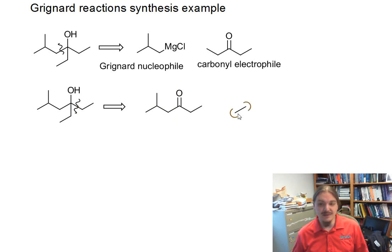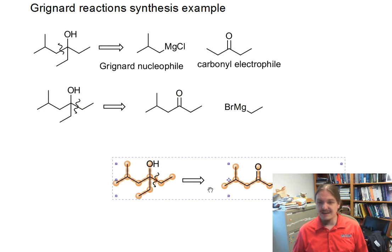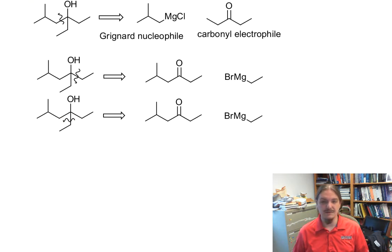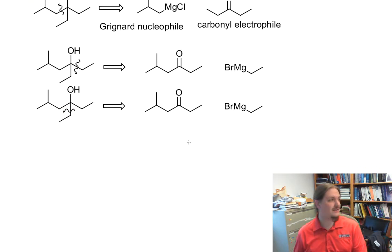The other piece that comes off has to have been the Grignard reagent. I'll use bromine this time. It turns out that if I had chosen the third carbon-carbon bond here, I'd actually get the same carbonyl electrophile and the same Grignard reagent because it's also an ethyl group.